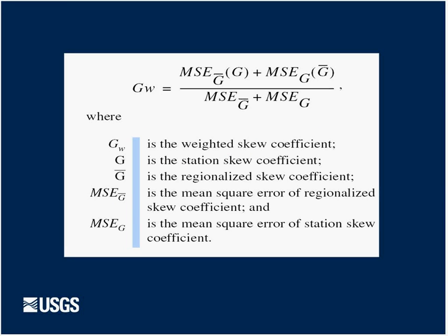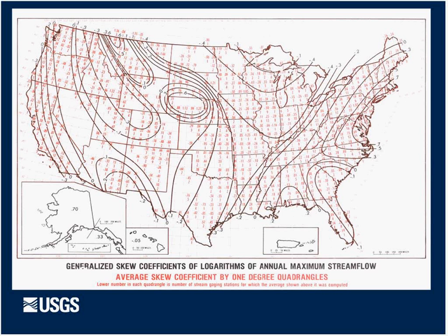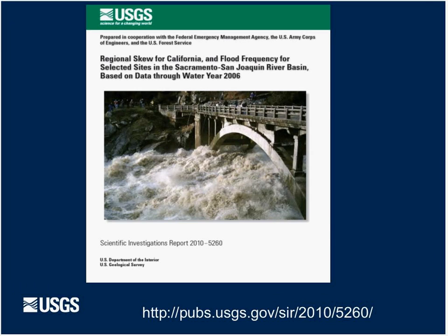When you have short-term records, you use the skew quite a bit, and you develop a regional skew to weight against the at-site skew to get better estimates. In Bulletin 17b, Plate 1 had national skew values, but it was dated, so it needed updating. For the California study, a report came out last year that did a regional skew analysis using Bayesian GLS — a new approach recommended by HFOG — to get better estimates of the regional skew.